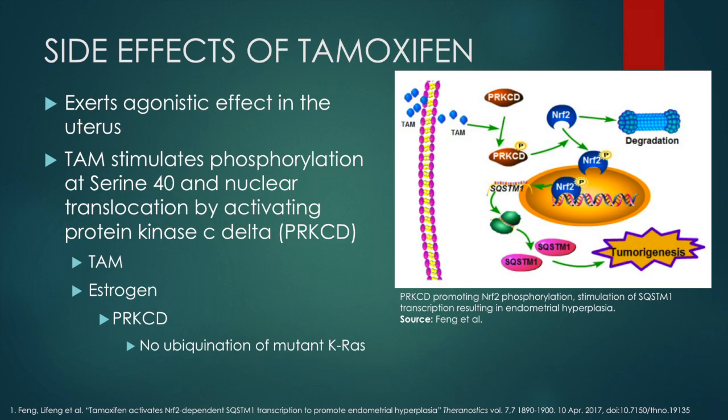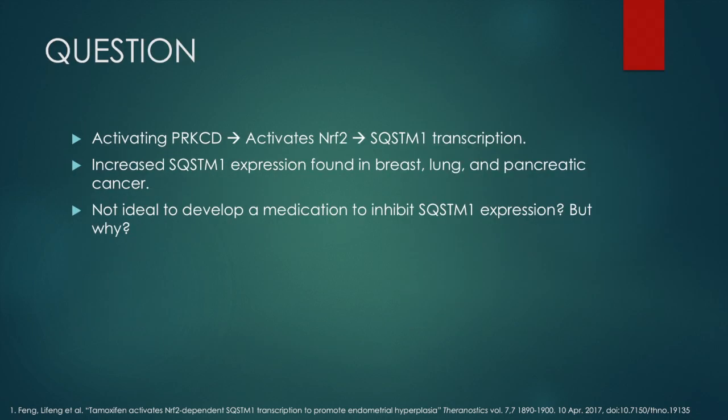So in activating protein kinase C-delta, it activates transcription factor NRF2, leading to the transcription of the sequestosome 1 gene that will produce the sequestosome 1 protein. In breast, lung, and pancreatic cancer, sequestosome 1 expression has been shown to be increased.